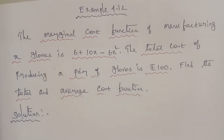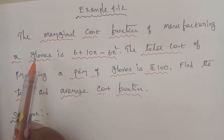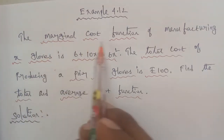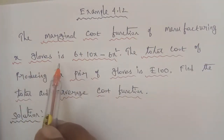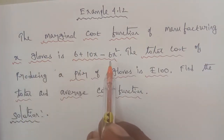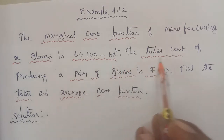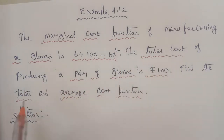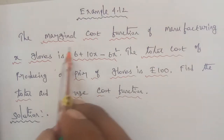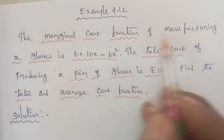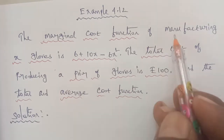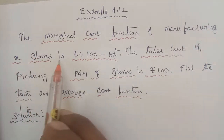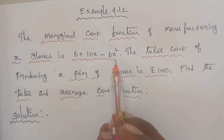Hi students, I am Gopinath. 12th Business Maths, Example 4.12. The marginal cost function of manufacturing x units is 6 plus 10x minus 6x square. The total cost of producing 2 units is rupees 100. Find the total and average cost function. Given: the marginal cost function of manufacturing x units is 6 plus 10x minus 6x square.